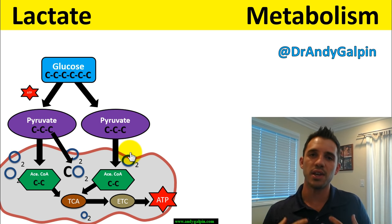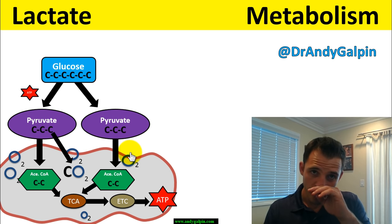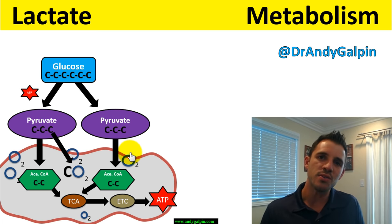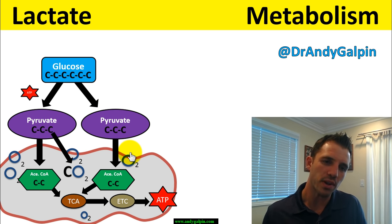When you start generating a bunch of pyruvate, you start respirating — you're trying to bring in air. You take a deep breath, bring in O₂. The O₂ binds with the extra carbon, gives you a little energy to make some high-energy intermediates, and you generate carbon dioxide, which you breathe out as waste. O₂ in, CO₂ out. If you look at the TCA cycle closely, for every turn of the Krebs cycle you generate two carbon dioxide molecules.